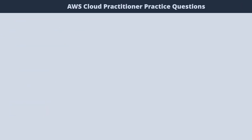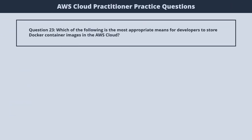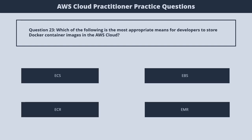Question 23. Which of the following is the most appropriate means for developers to store Docker container images in the AWS cloud? 1. Elastic Container Service. 2. Elastic Beanstalk. 3. Elastic Container Registry. 4. Elastic Map Reduce. The correct answer is 3. Elastic Container Registry.